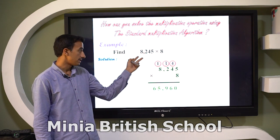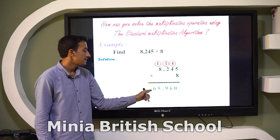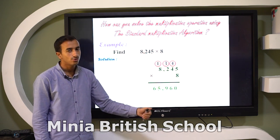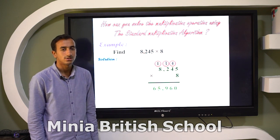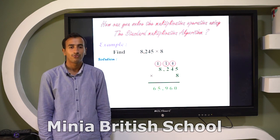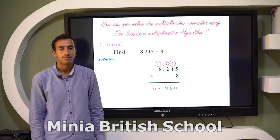So the answer: 8,245 times 8 is equal to 65,960. Check your answer to the previous video, to the previous lesson, Lesson 3, the partial product. That's our lesson today, Lesson 4, the Standard Multiplication Algorithm in the first term in Unit 7.